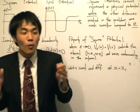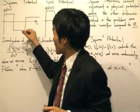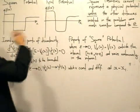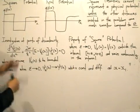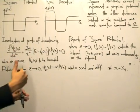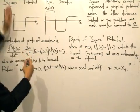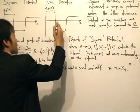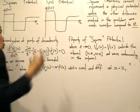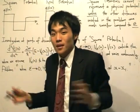This square potential cannot represent a physical potential because a physical potential must be continuous throughout the whole domain of x. The real potential is given as something like this — it's continuous, and these are the points where the potential changes dramatically. As opposed to a point of discontinuity, the potential drops dramatically in one interval and increases dramatically in another. So what's the point of using square potentials if they can't represent a real physical potential?